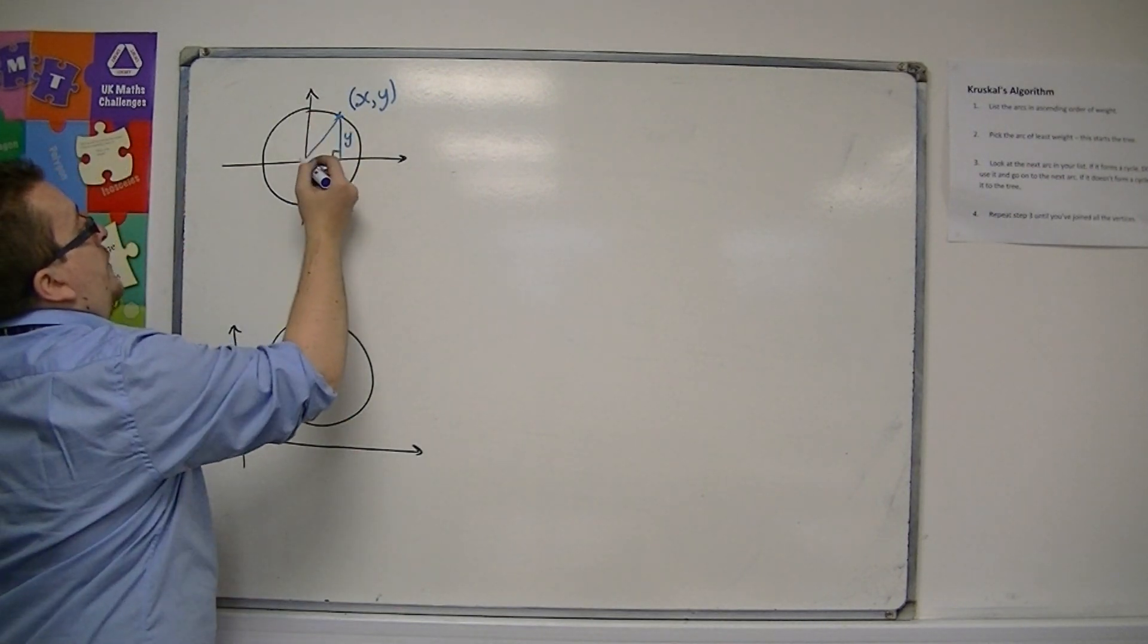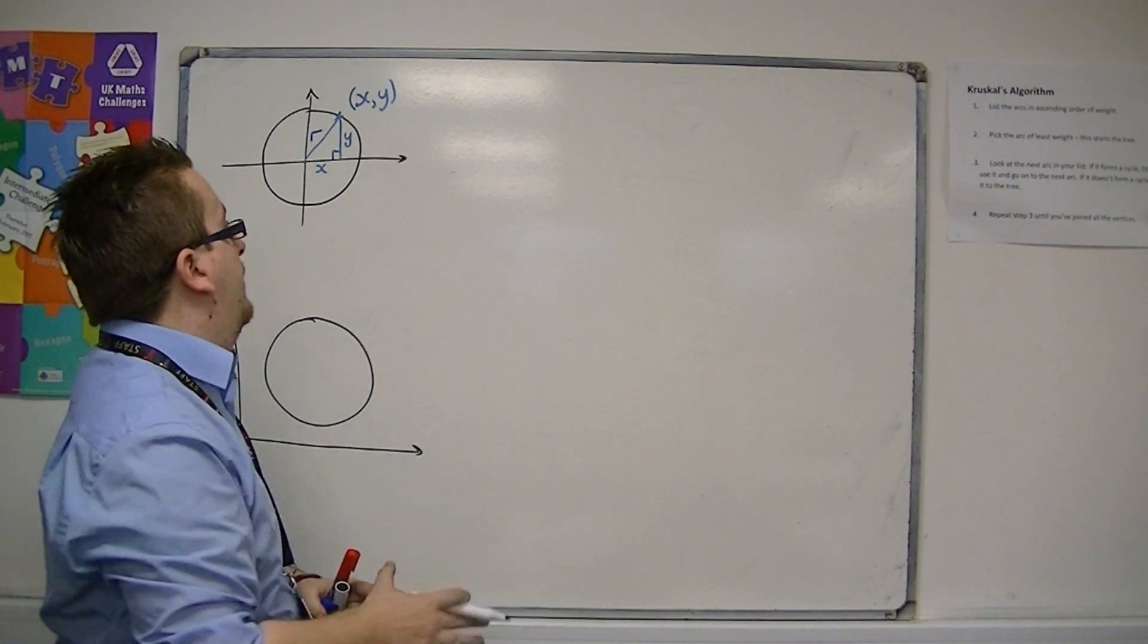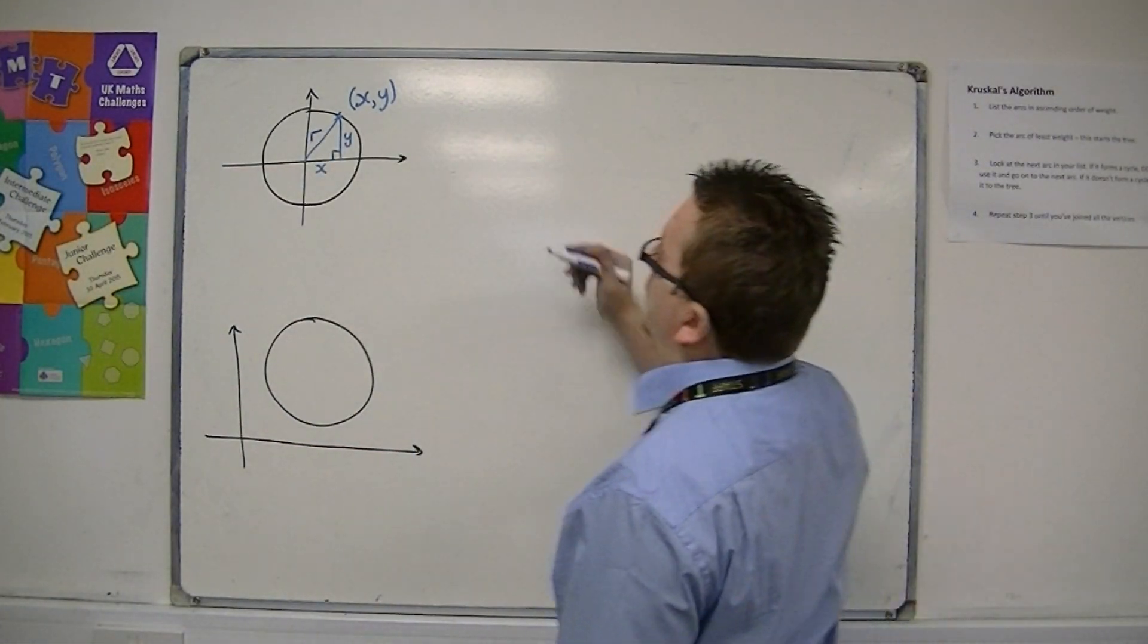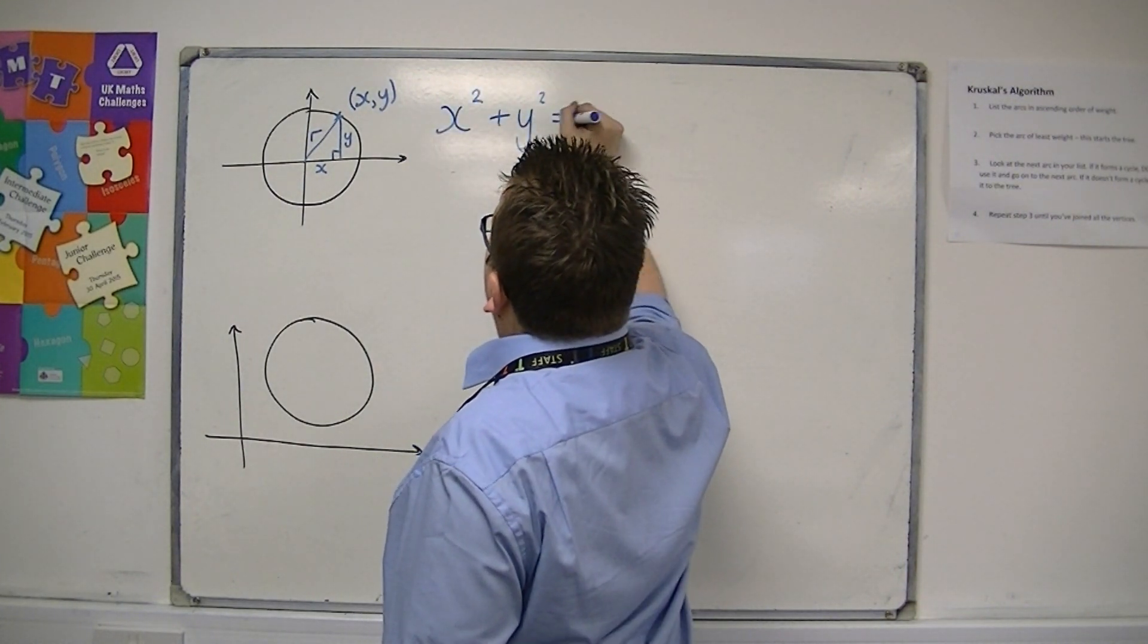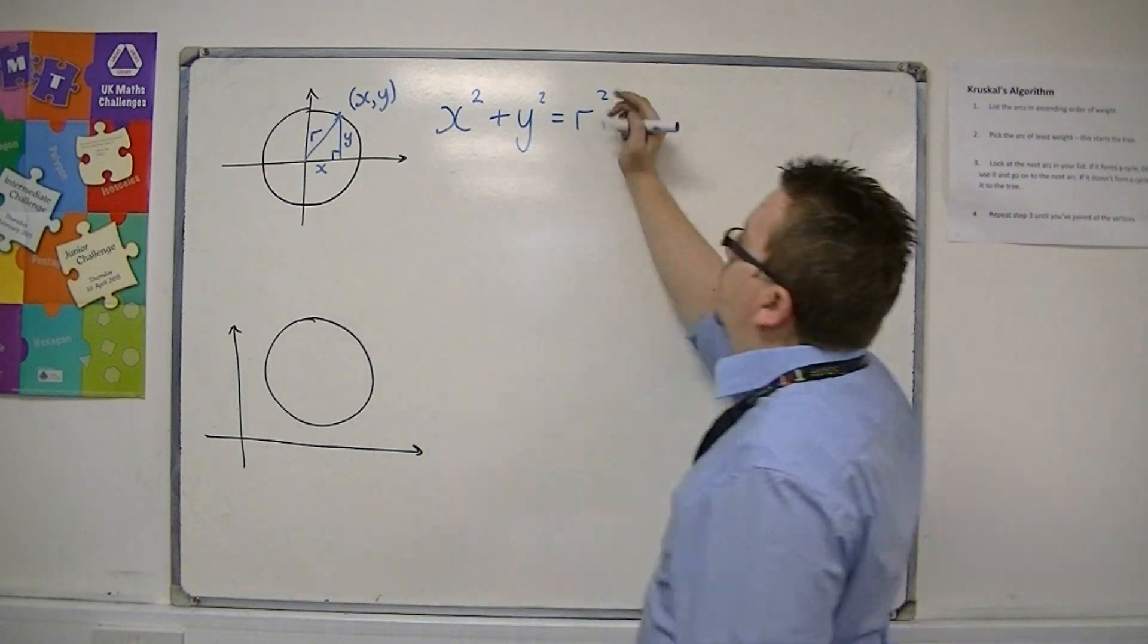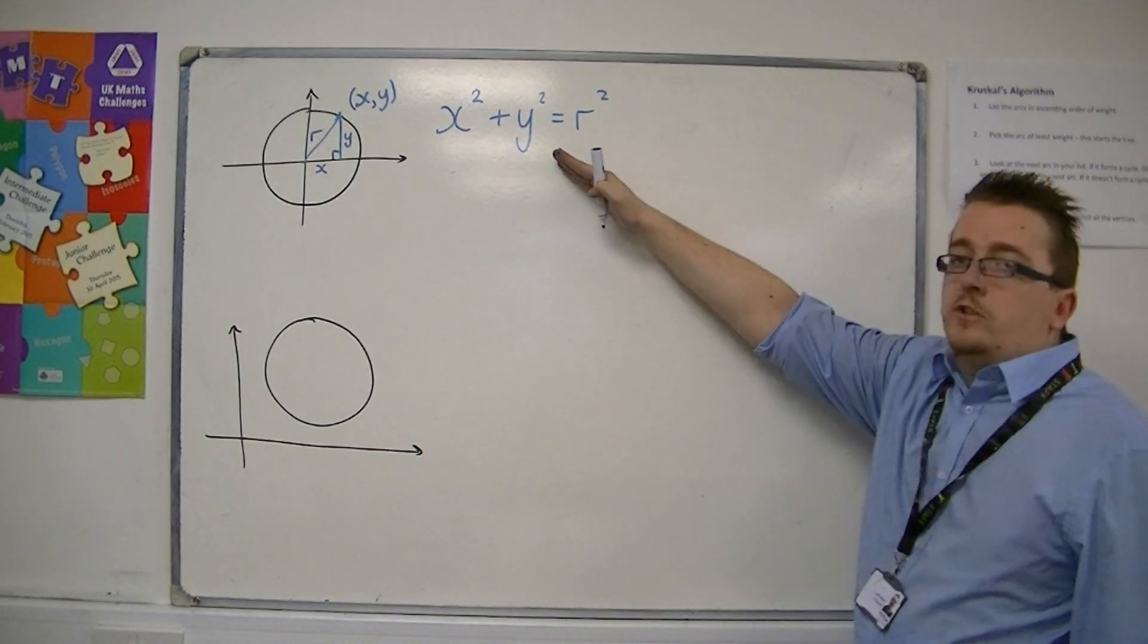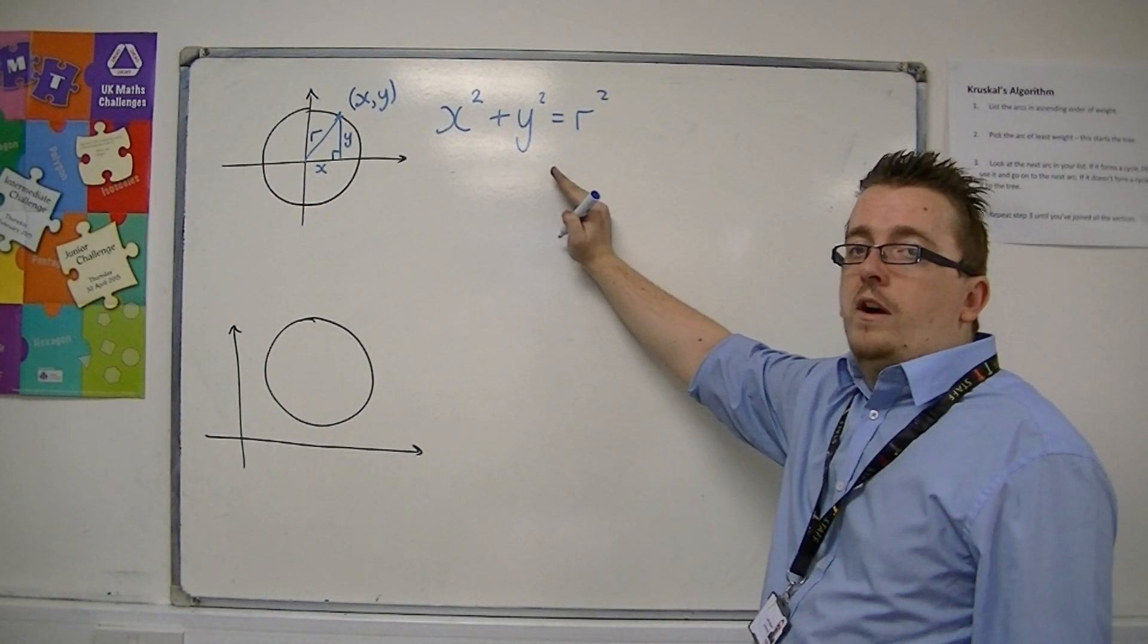We could say that this length is r, the radius of the circle. And so, using Pythagoras, we can say that x squared plus y squared is r squared, where r is the radius. This describes a circle centered at the origin with radius r.